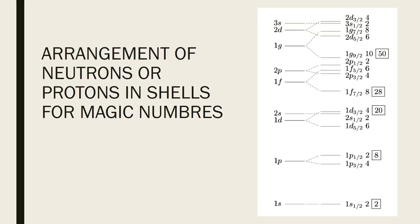Just as electrons fill 1s, 2p, 3d, 4f orbitals, in nuclear shells nucleons also fill s, p, d, f orbitals in a systematic way. The s orbital can accommodate 2 nucleons, p can accommodate 6, d can accommodate 10, and f can accommodate 14 nucleons. In this way, just as electrons are arranged in orbitals, nucleons can be arranged in different shells.